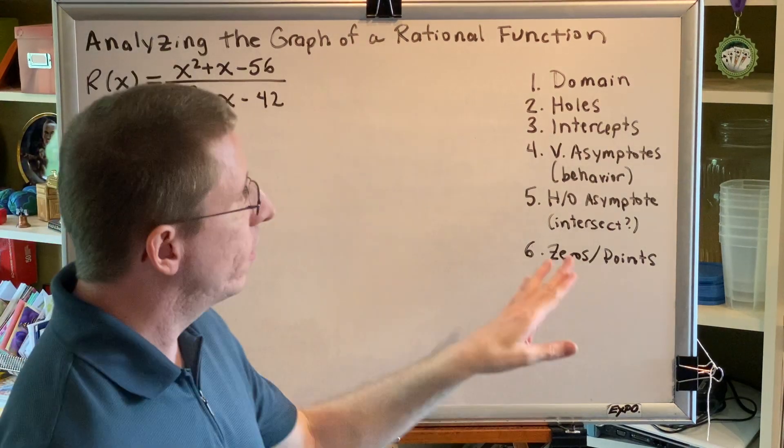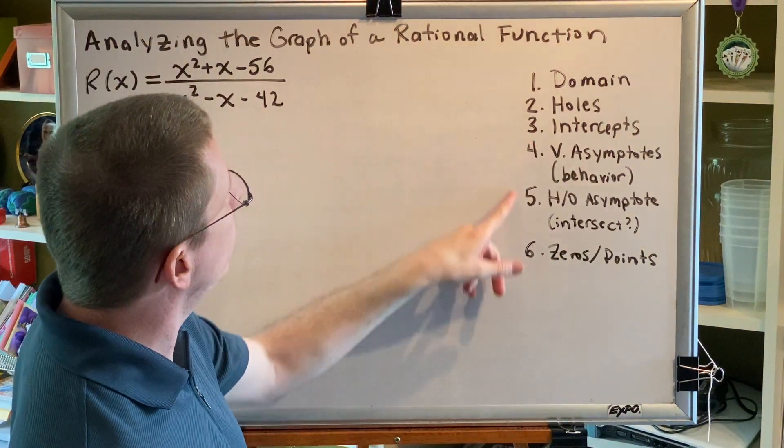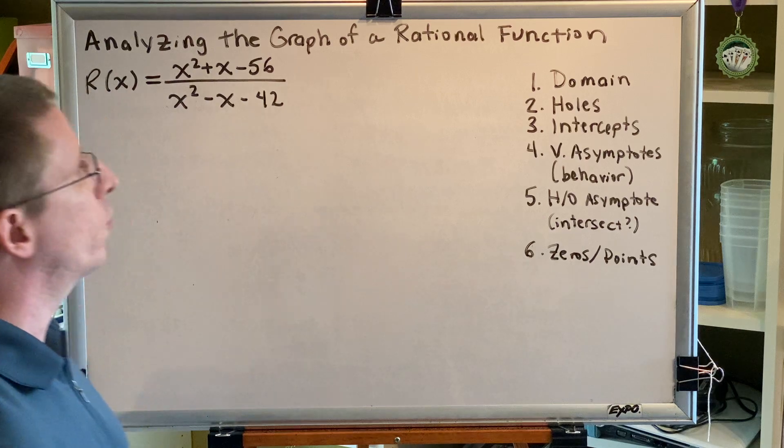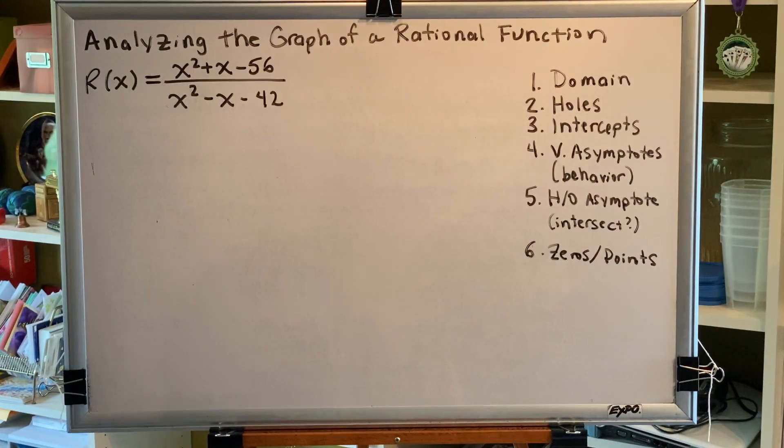I've placed a shorthand summary of the six steps that we need to go through in order to create the graph of this rational function. Let's start at the beginning and go in order.